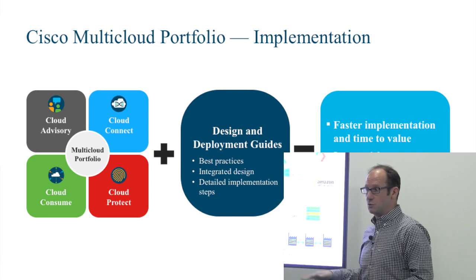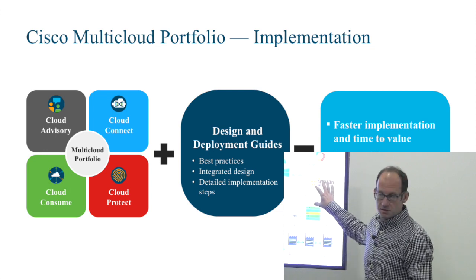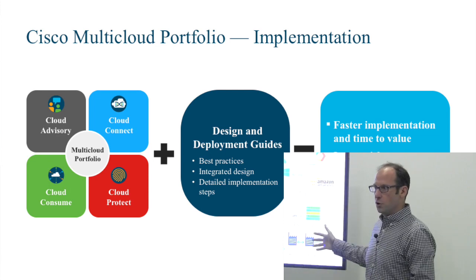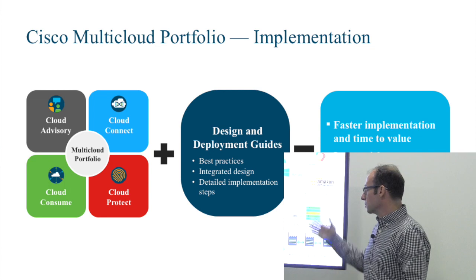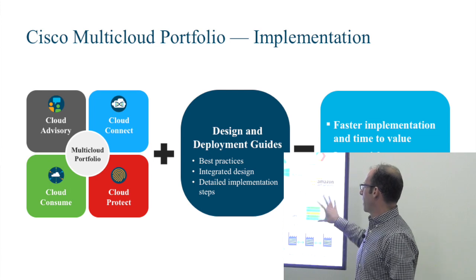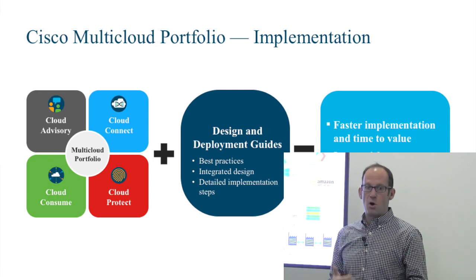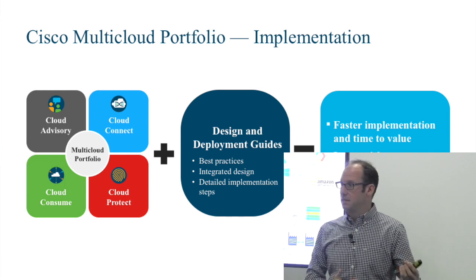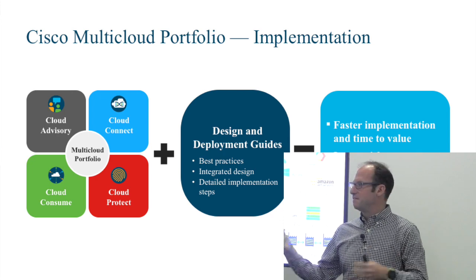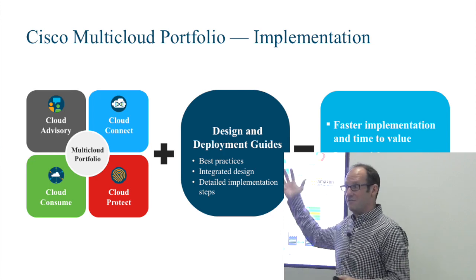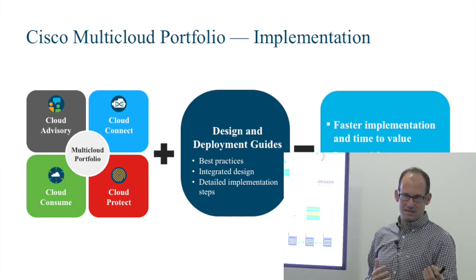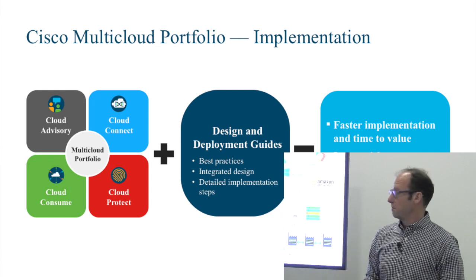The cloud does offer things we don't have on-prem: lots of automation, DevOps tools and capabilities we can leverage for networking. But when you have multiple environments — multiple on-prems and multiple clouds — there's inconsistency in security policies and capabilities. Defining applications, users, subnets, VPCs, VNets consistently across every environment is a major challenge.